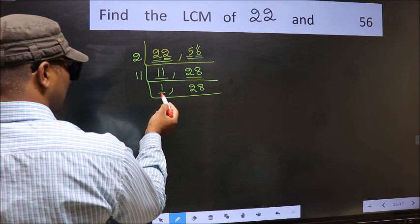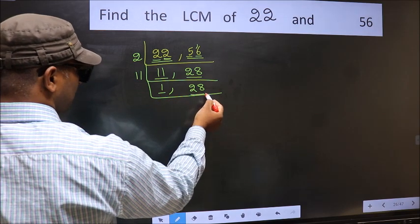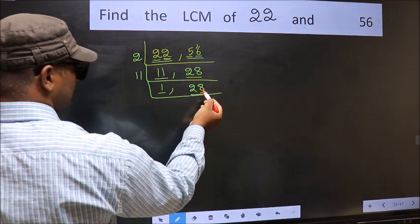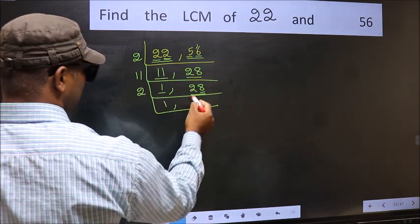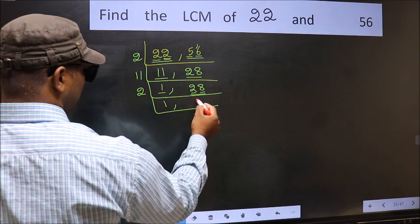We got 1 here, so focus on the other number 28. Last digit 8, even, so take 2. First number 2, when do we get 2 in 2 table? 2 times 1 is 2.